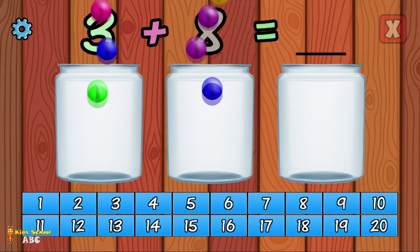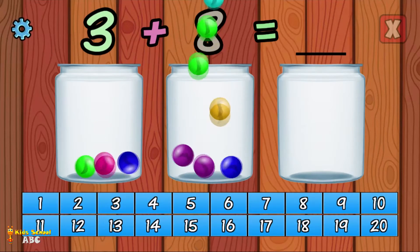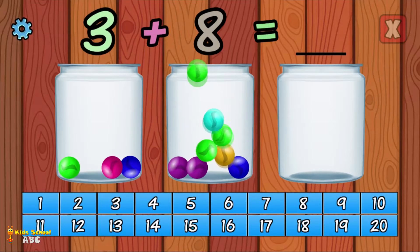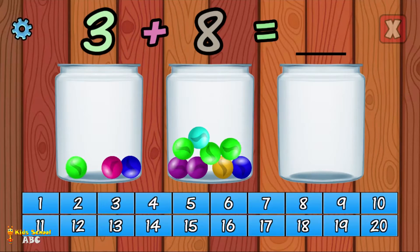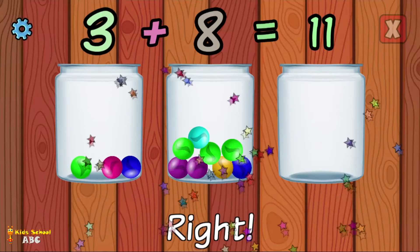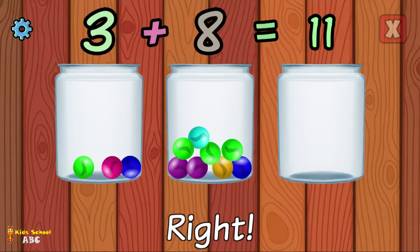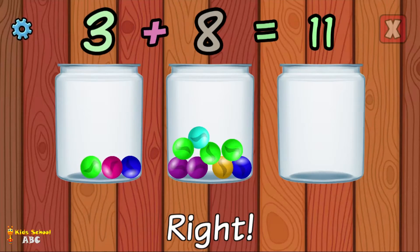What is 3 plus 8? Right! 3 plus 8 equals 11.